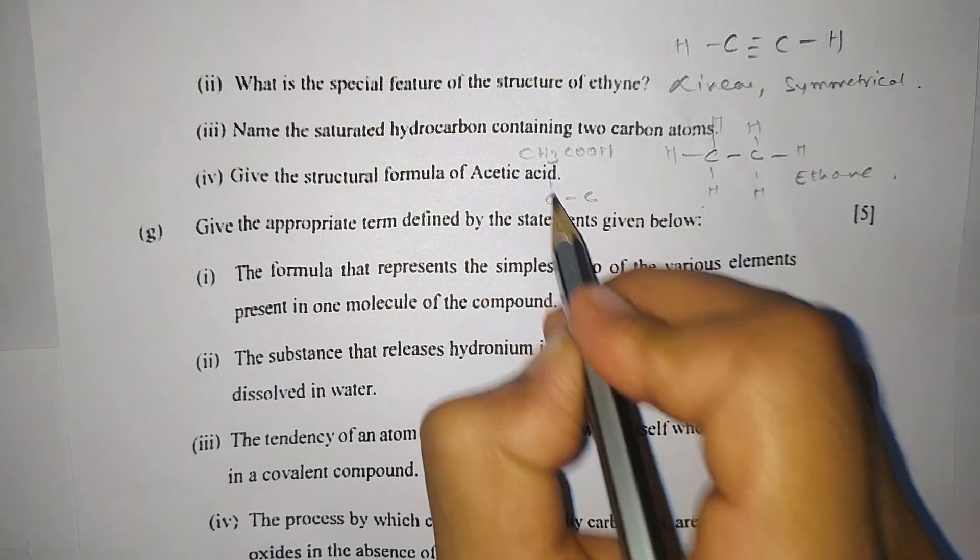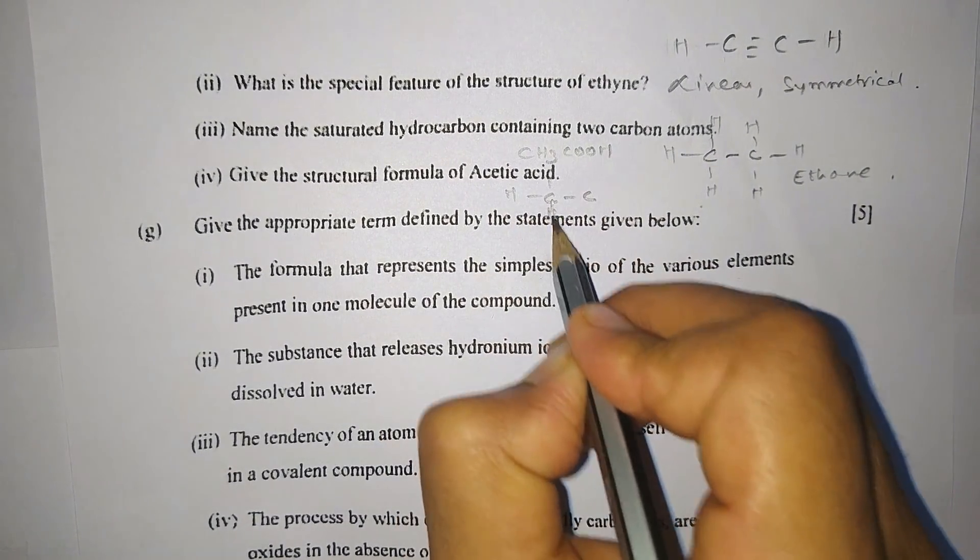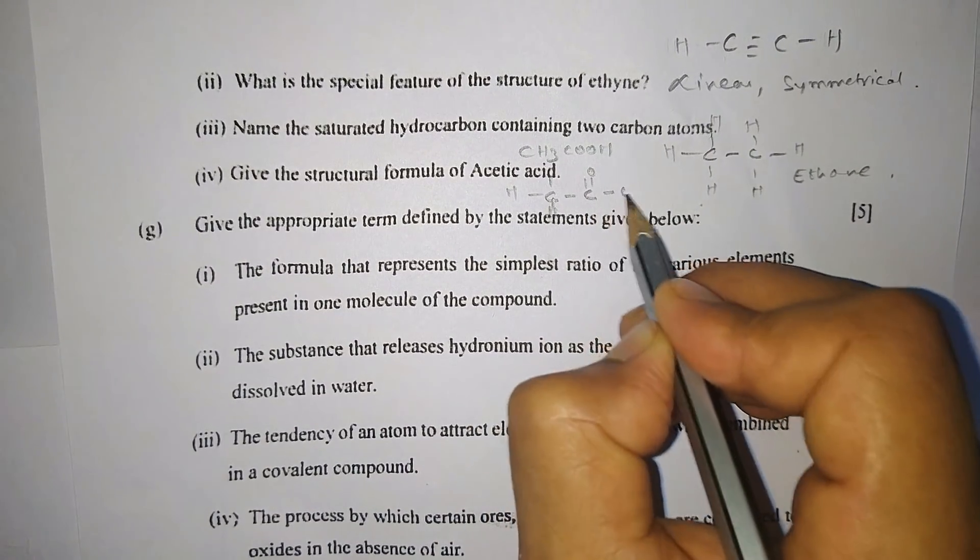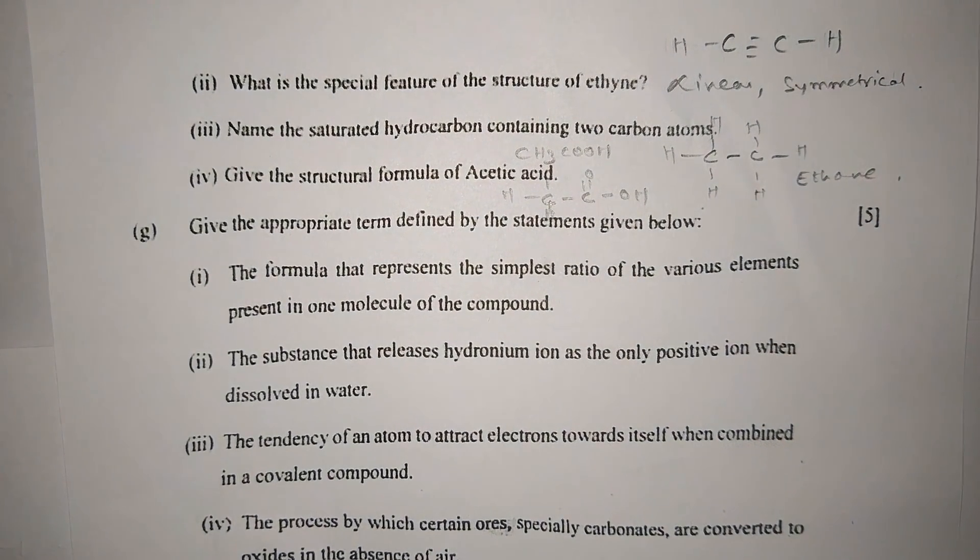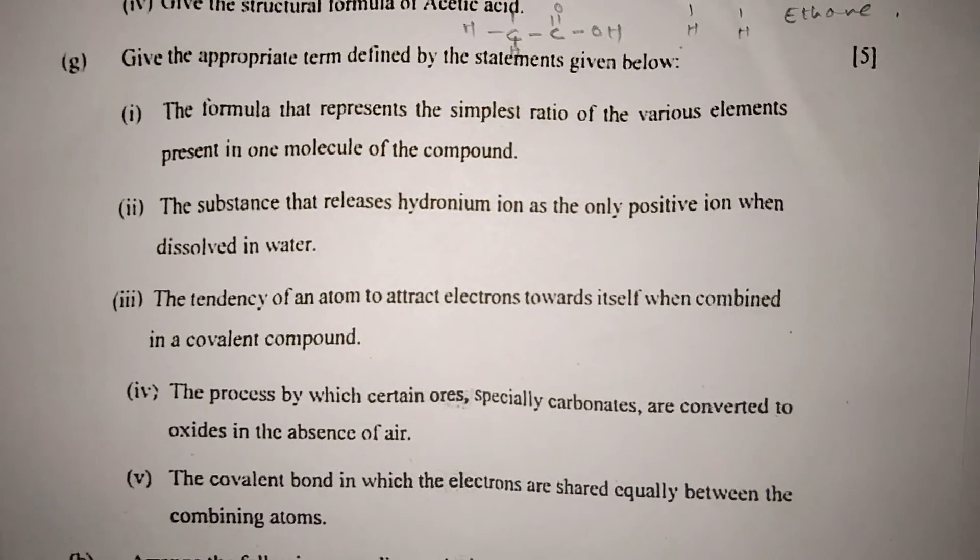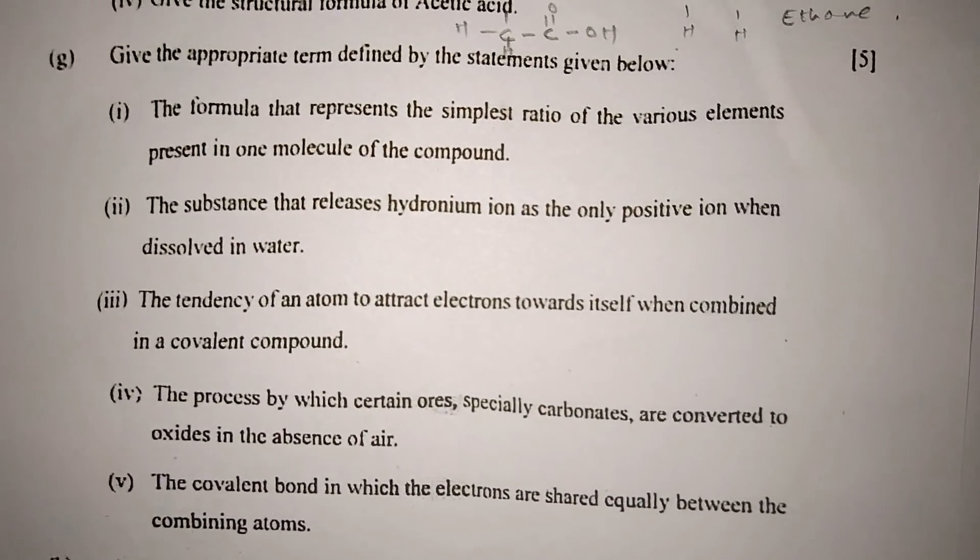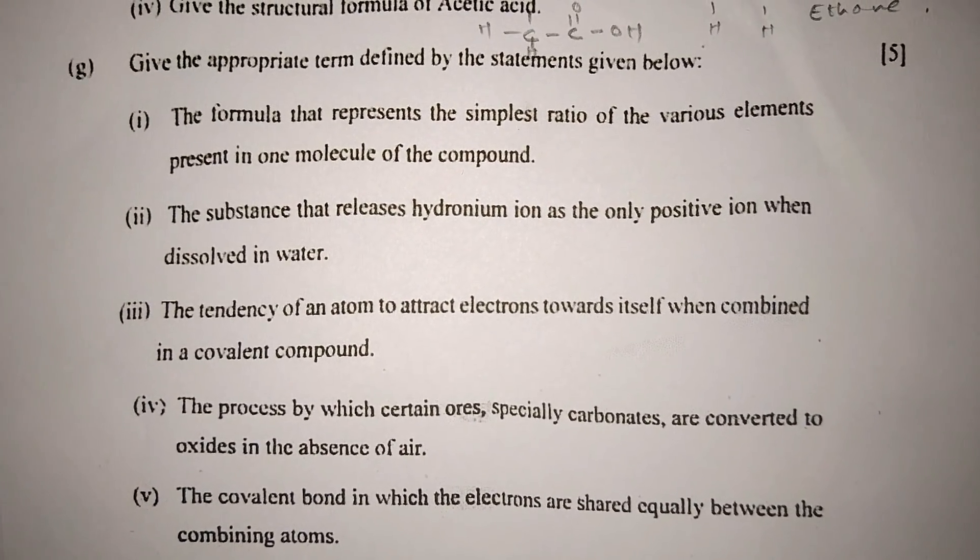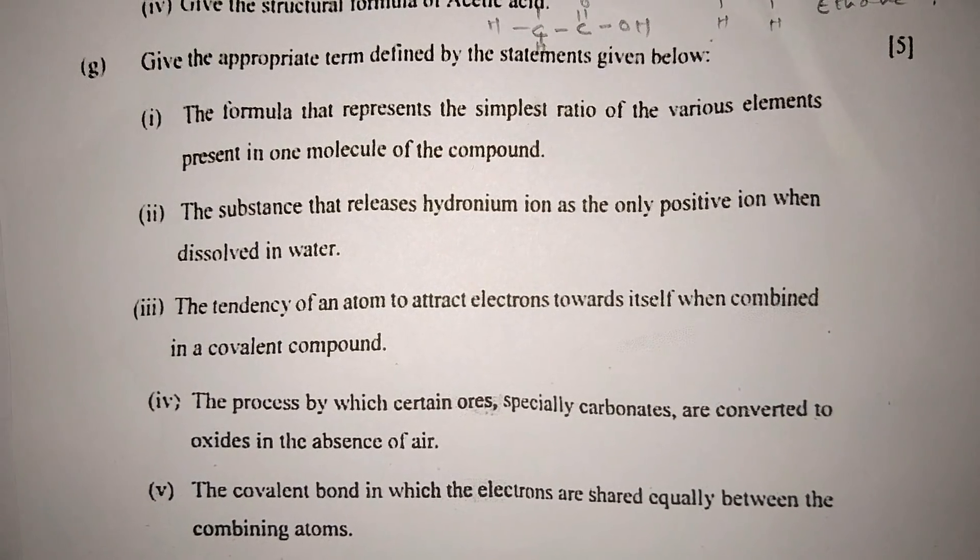Number four: Give the structural formula of acetic acid. Acetic acid formula is CH3COOH. So we have two carbon atoms, three hydrogen, it will be double bond and OH. So CH3COOH.